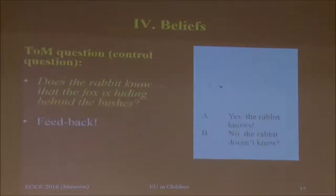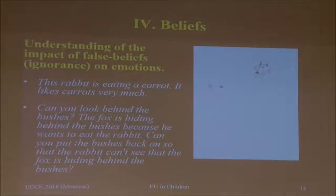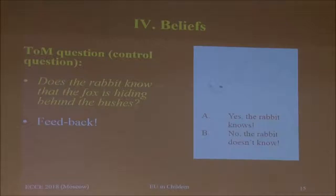Another example: the rabbit is eating a carrot — he likes carrots very much. Hiding behind the bush, there's a fox who wants to eat the rabbit. Then you ask a classical theory of mind question: 'Does the rabbit know that the fox is hiding behind the bush?' And then the child can choose between two possible answers: yes, the rabbit knows, or no, the rabbit doesn't know.